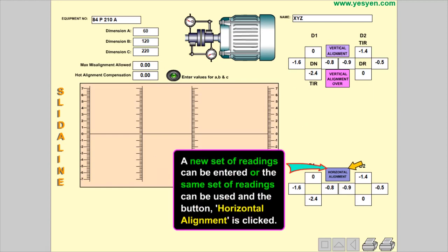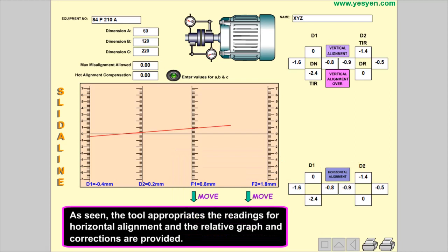A new set of readings can be entered or the same set of readings can be used and the button Horizontal alignment is clicked. As seen, the tool appropriates the readings for horizontal alignment and the relative graph and corrections are provided.